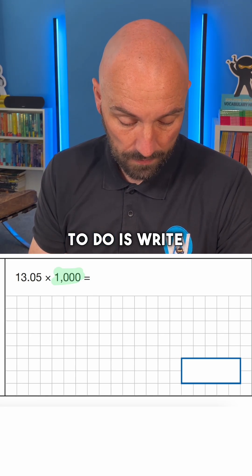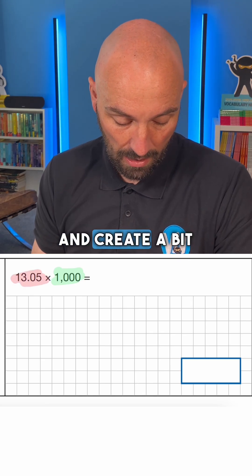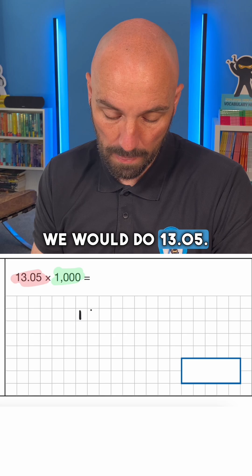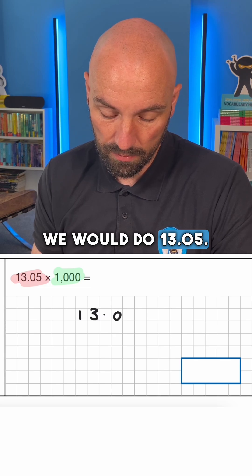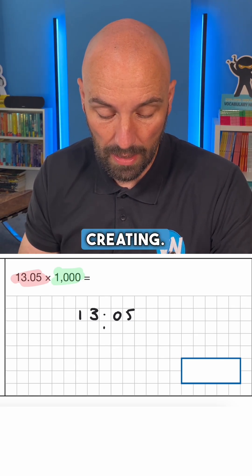So all we're going to do is write this number out with its decimal and create a bit of a place value chart to solve the question. So again, we would do 13.05.